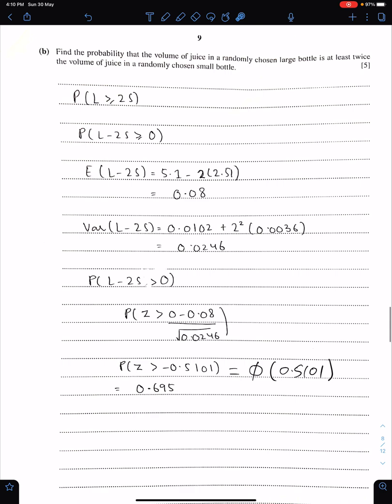Point B: Find the probability that the volume of juice in a randomly chosen large bottle is at least twice, twice means multiple, of the volume of juice in a randomly chosen small bottle. We need this probability. L greater or equal to 2S. First, you need to bring 2S on the left-hand side. So we need this probability now. Make sure you will square this number in the calculation of variance. For mean, you just need to use mean of L minus 2 mean of S. This is the value of mu.